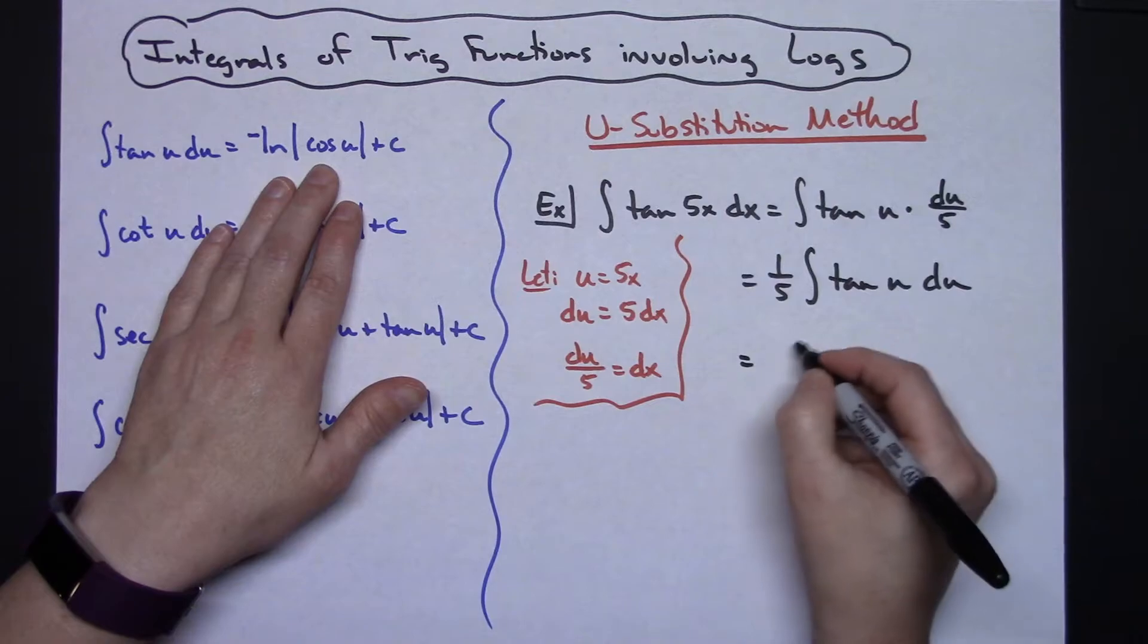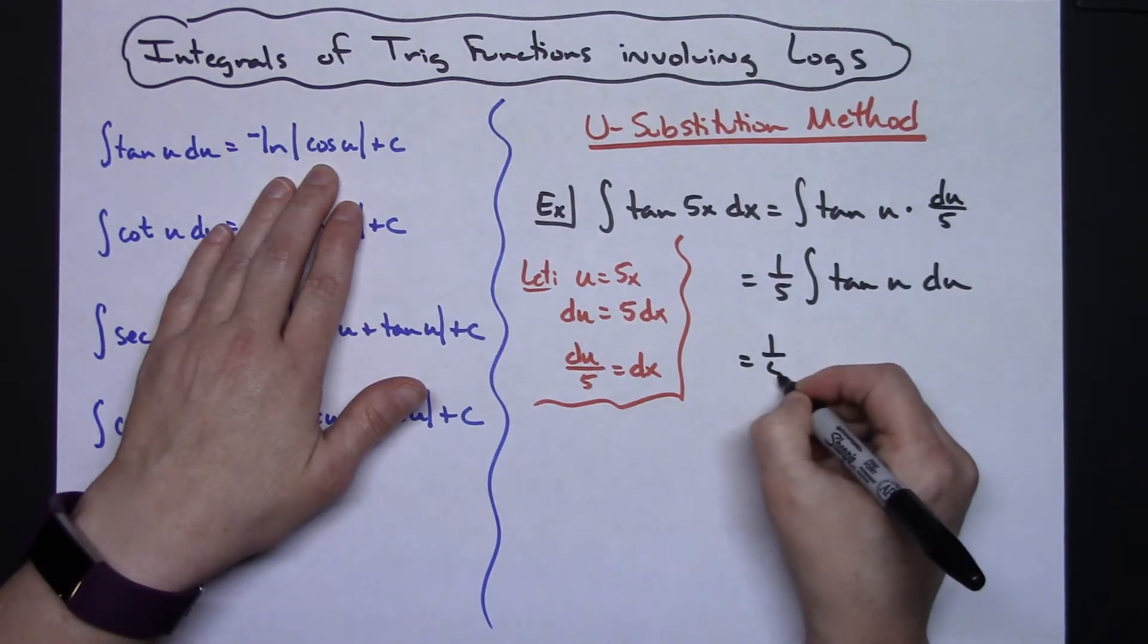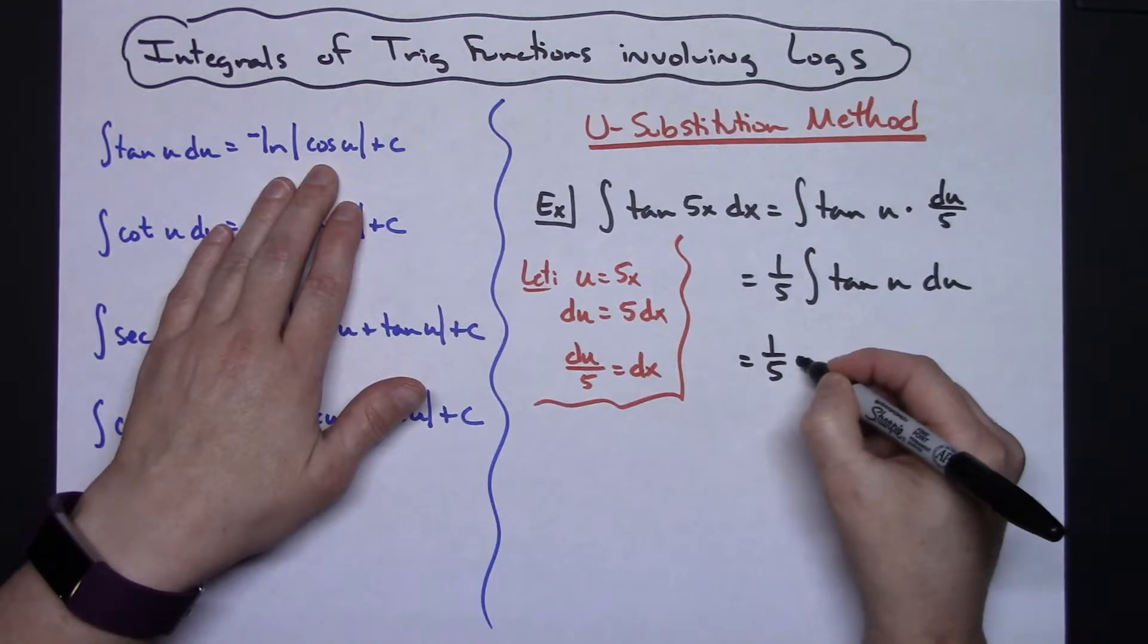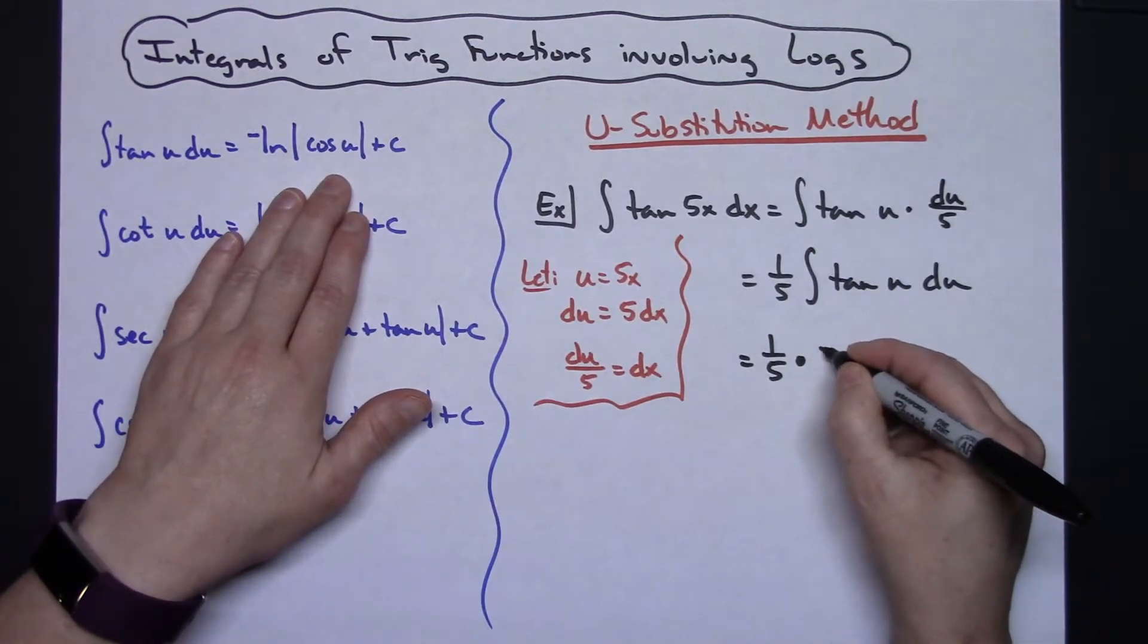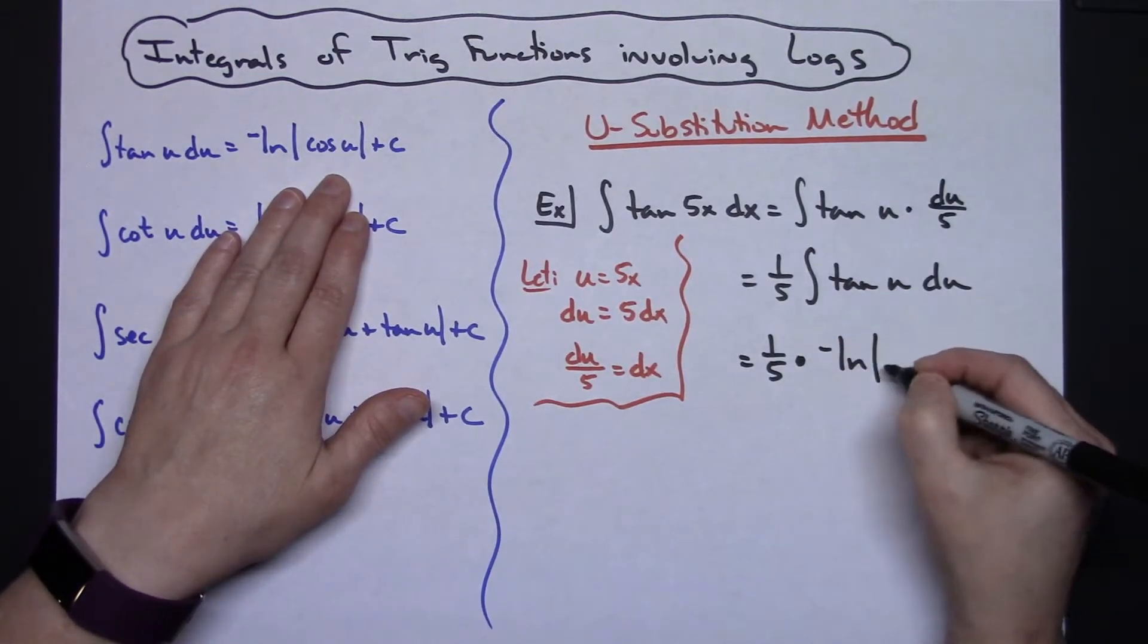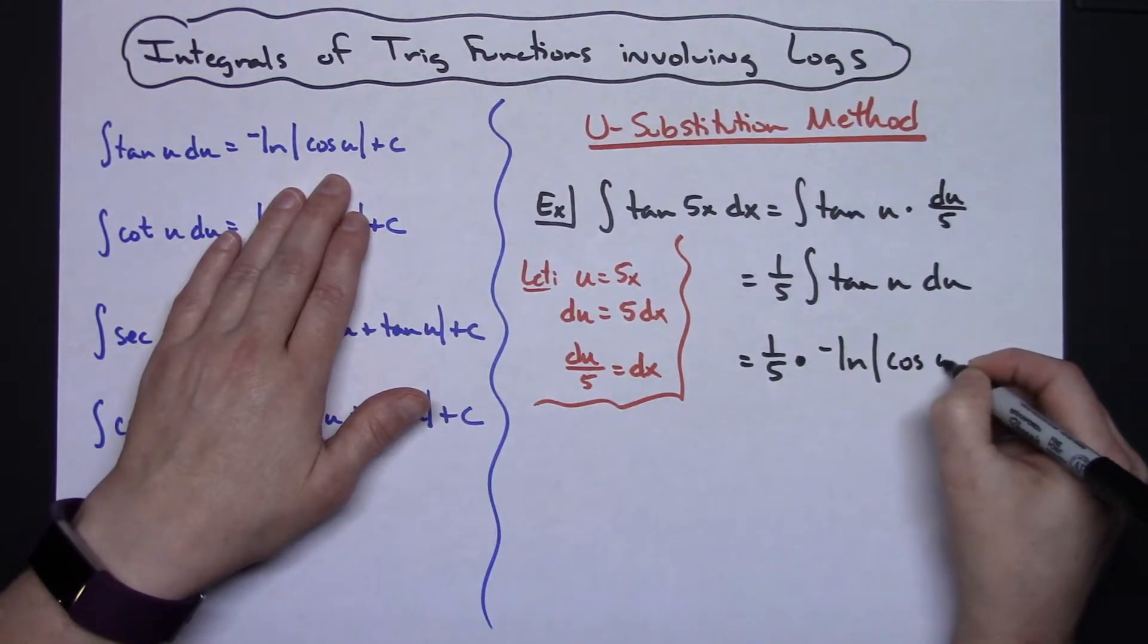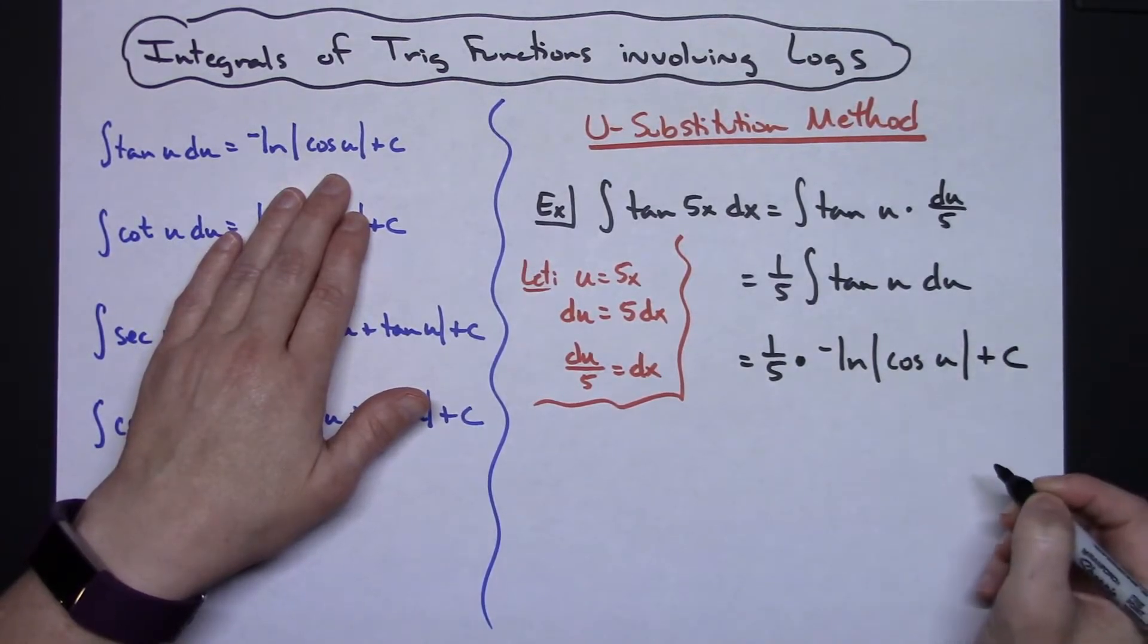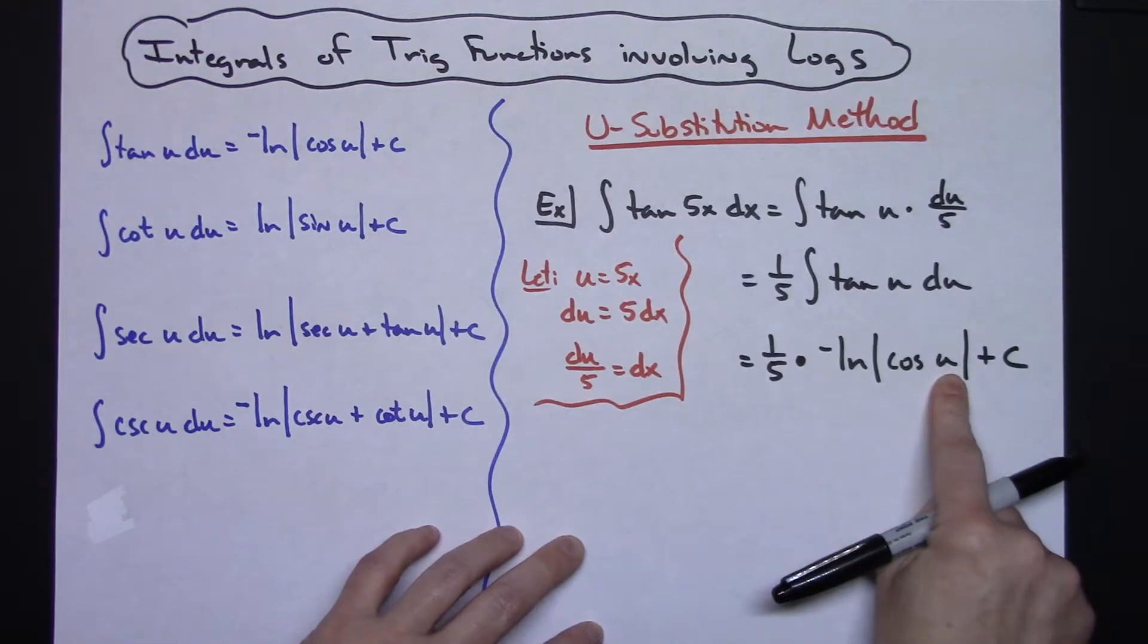So long as you have that memorized this is going to go pretty well. So one-fifth times this integral, negative natural log absolute value cosine u plus c.